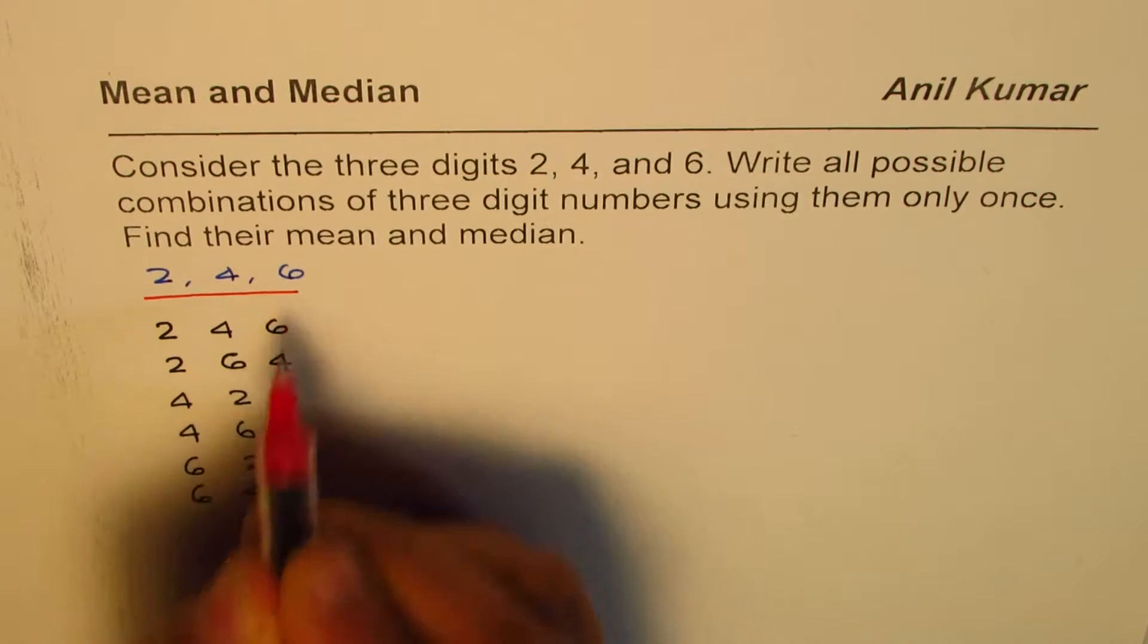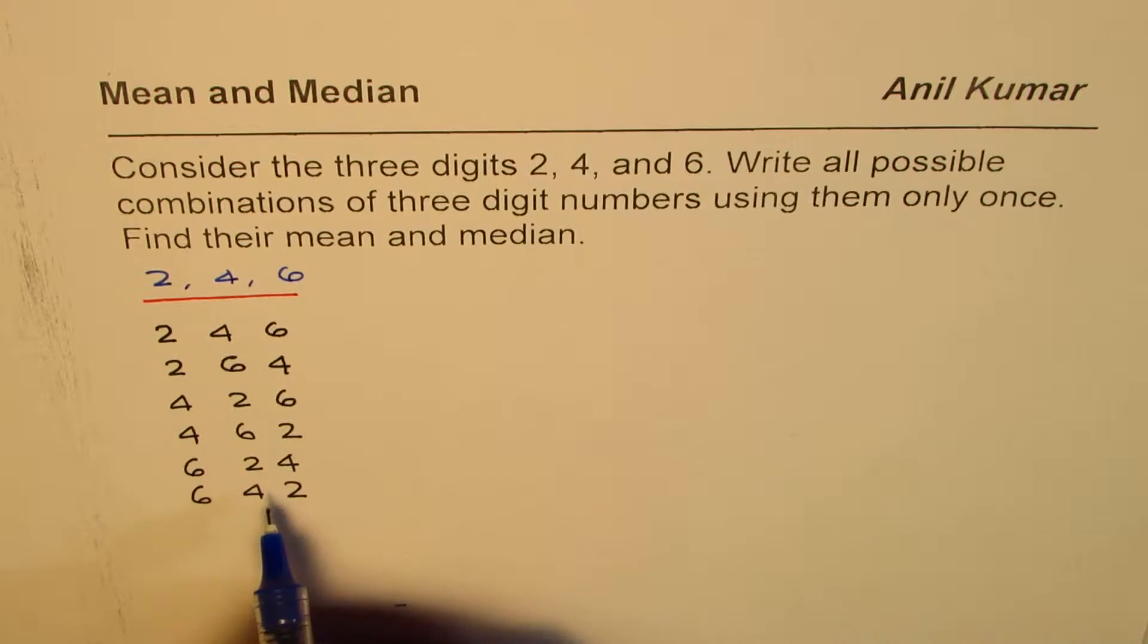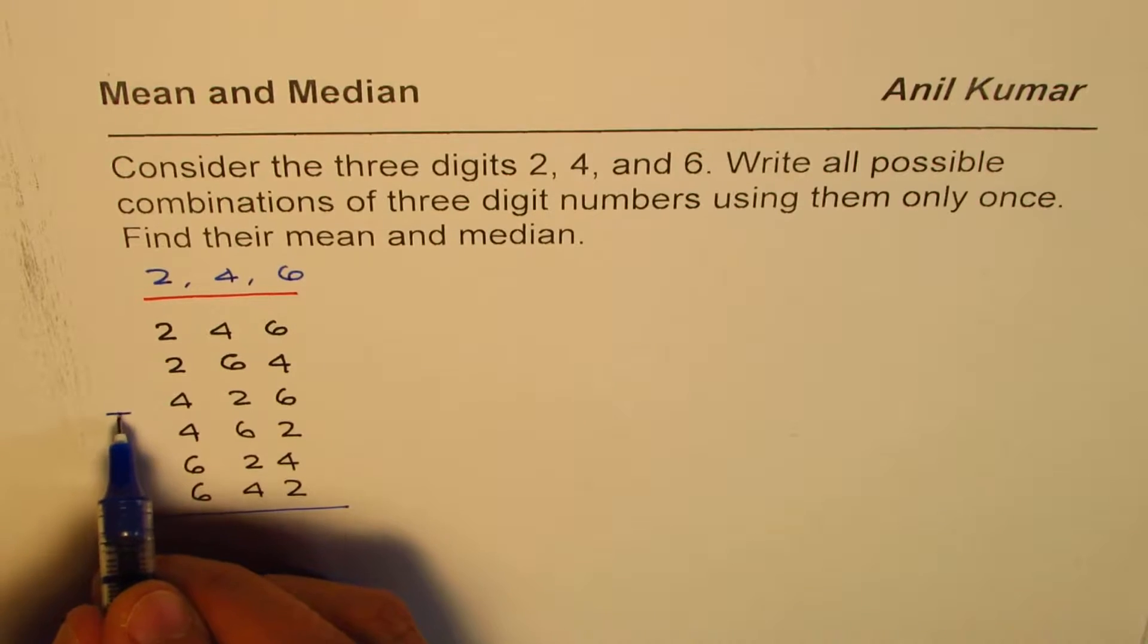Okay. Now, with these numbers, let us find the mean and the median. So, what is the mean here? To find the mean, we will have to add all these numbers and divide by 6 since we have 6 of these numbers. So, let's find mean with this. So, mean should be, let us add them up.